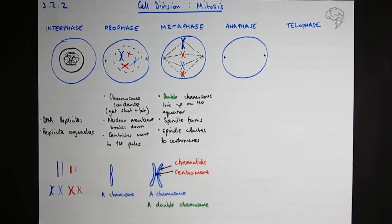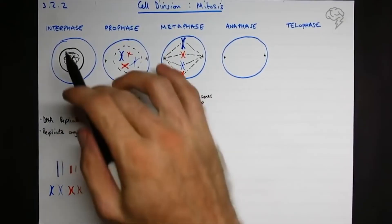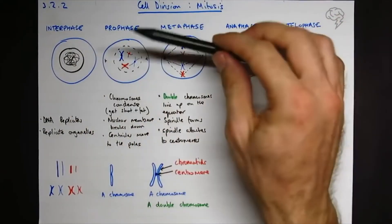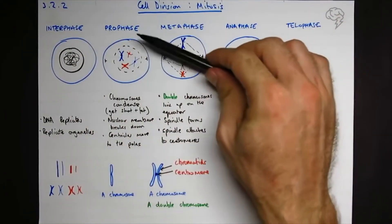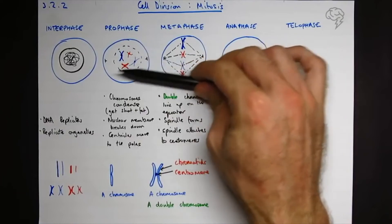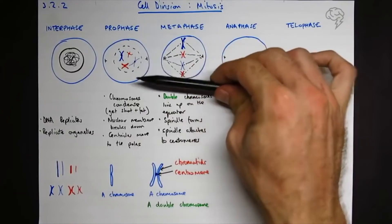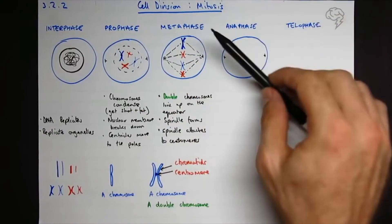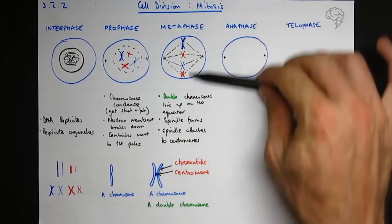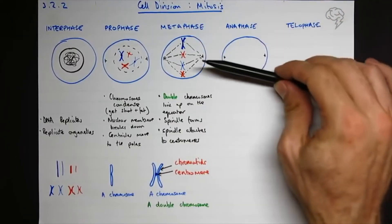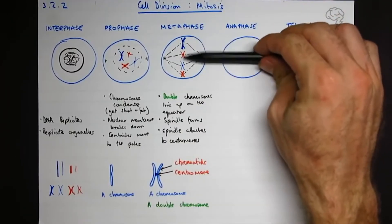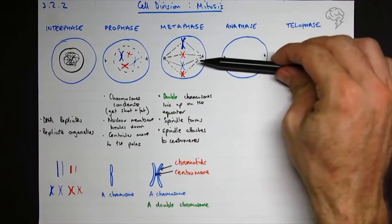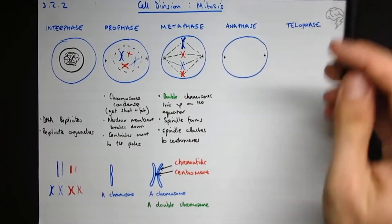So to recap so far: interphase - DNA replication, that's all you need to know. Prophase - chromosomes condense and become visible, the nuclear membrane breaks down, and the centrioles move to the poles. Metaphase - characterized by the chromosomes lining up on the equator, the spindle forming, and the spindle attaching to the centromeres.